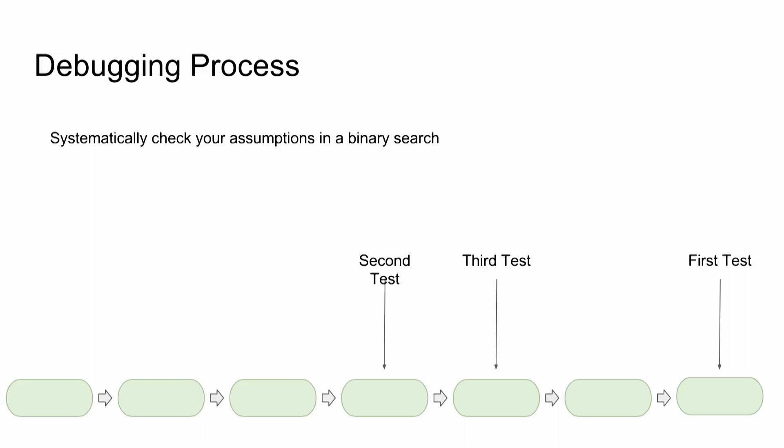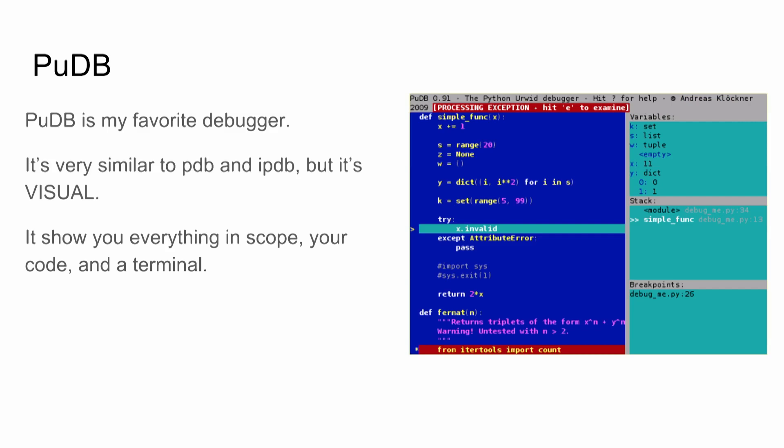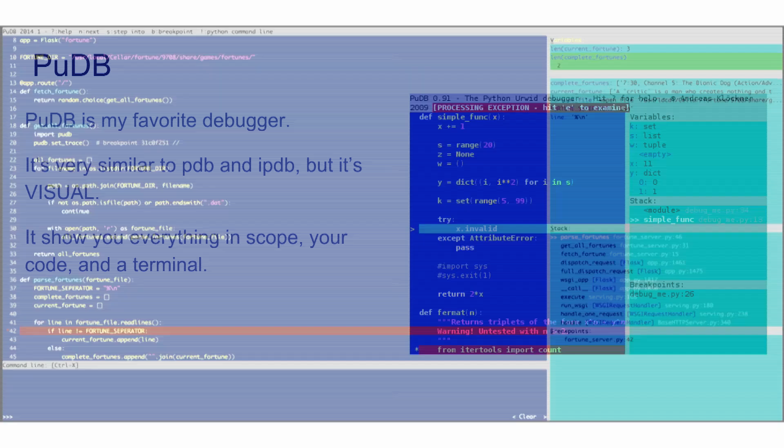Who here has used a debugger? A lot of hands — everyone knows how to use one, that's fantastic. There's the PyCharm debugger, PuDB, IPDB — we've got a lot. This one's PuDB; it's my favorite. It's got this beautiful display that we might remember from grocery store checkout counters like ten years ago. It's called ncurses, and I love it because it really shows you everything. It takes over your terminal.